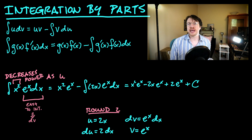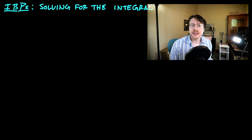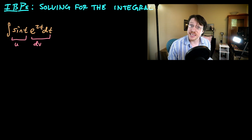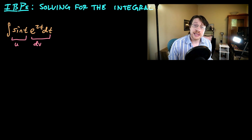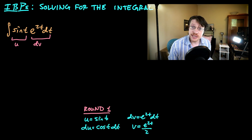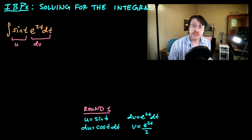There's another important way to use integration by parts: solving for the integral. For the integral of sine t times e to the 2t dt, no matter what we choose for u or dv, neither term disappears. Instead, we select u equal to sine t so that after two rounds, sine t comes back again. And dv equal to e to the 2t dt, so v equals e to the 2t divided by 2. With du equal to cosine t, the result is cosine t times e to the 2t over 2, minus the integral of cosine t times e to the 2t over 2 dt.